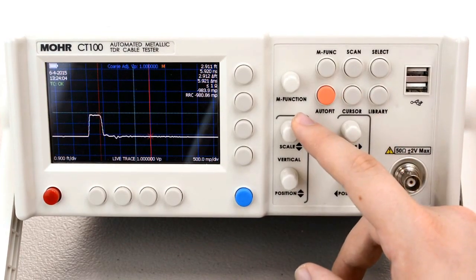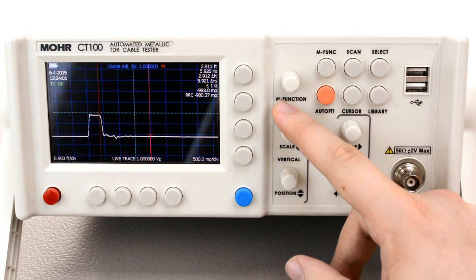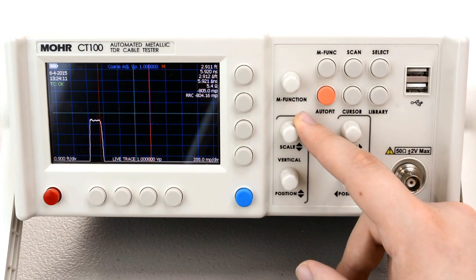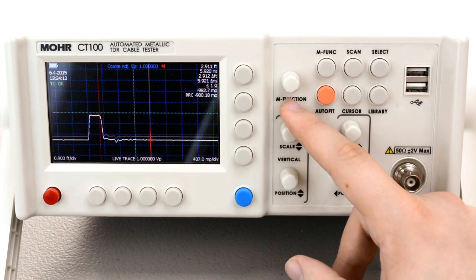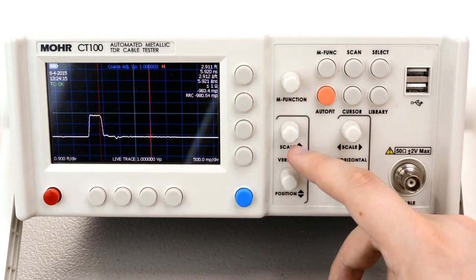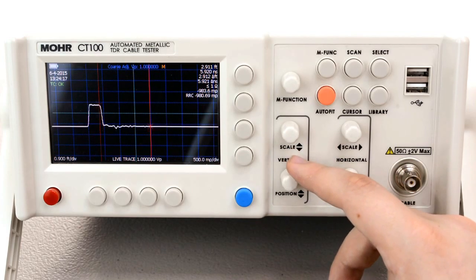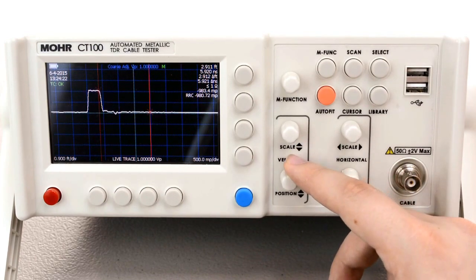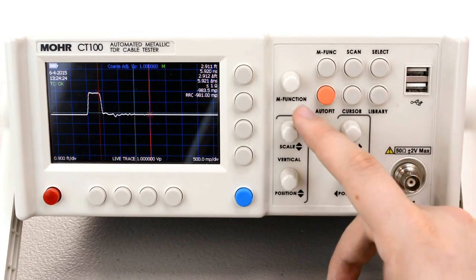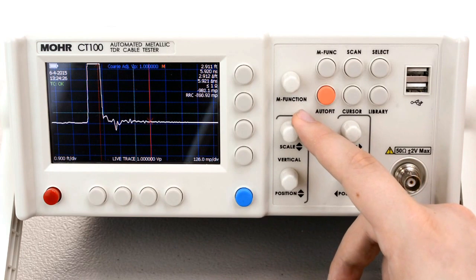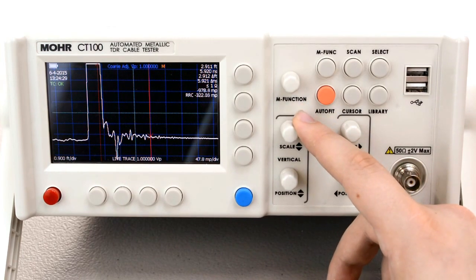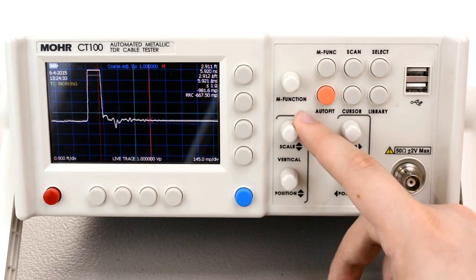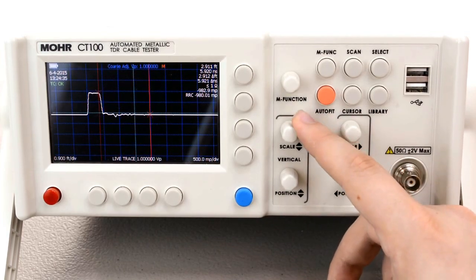Now this is vertical scale. By changing vertical scale you zoom in on that portion of the trace. Now this is best utilized with this position knob which is this one right here. It allows you to change the position of the trace so that when you do use vertical scale, not everything goes off the screen. This allows you to have very precise measurements of where you're looking.